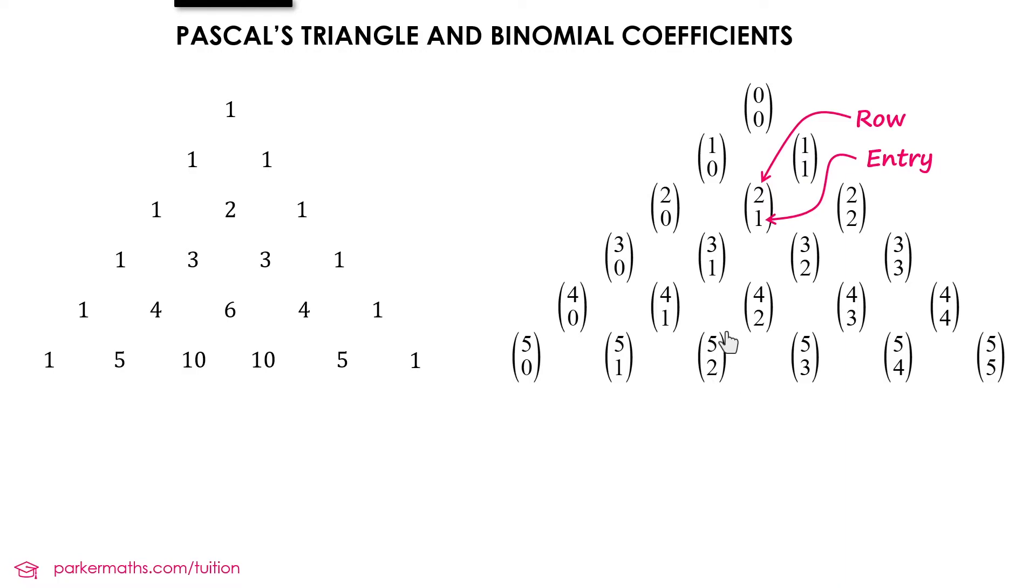And there is a formula to directly calculate any value in Pascal's triangle, any of these binomial coefficients. And the formula looks like this. It's in your formula book, so it's not one that you have to remember. And we would read this as n choose r or nCr.